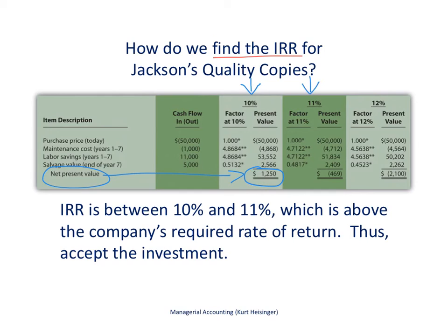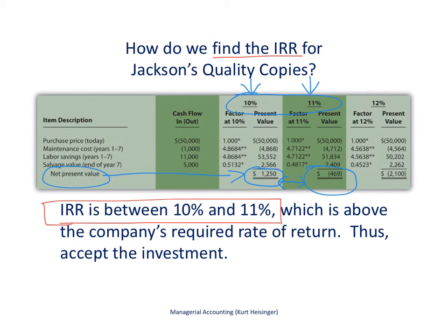We try 11%, and that gives us a net present value that is negative at $469. What that means is that the internal rate of return is somewhere between these two rates — between 10% and 11% — because at 10% our net present value is $1,250 positive, and at 11% our net present value is $469 negative. So our internal rate of return, the rate required to get a net present value of zero, is somewhere between 10% and 11%. That's the best we can do using trial and error and the tables typically provided in a managerial accounting textbook.